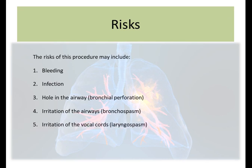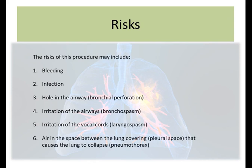As the instrument goes through the voice box down to the trachea and the carina, it passes through the organ called the vocal cords — the voice box — which technically is known as the larynx, and which also contains a group of smooth muscles. Contractions of those smooth muscles can cause something medically termed as laryngospasm. And finally, air in the space between the lung covering can cause the lung to collapse — something in medicine we call pneumothorax.